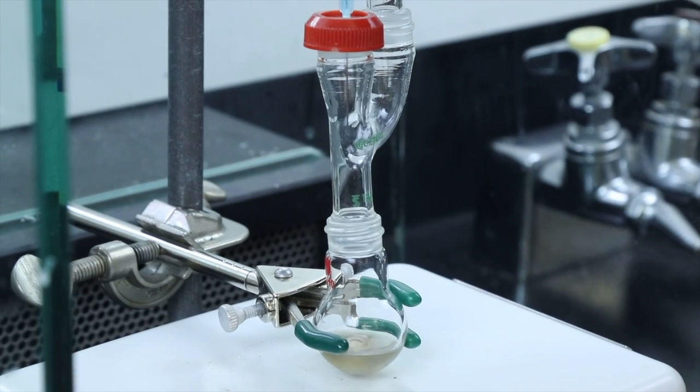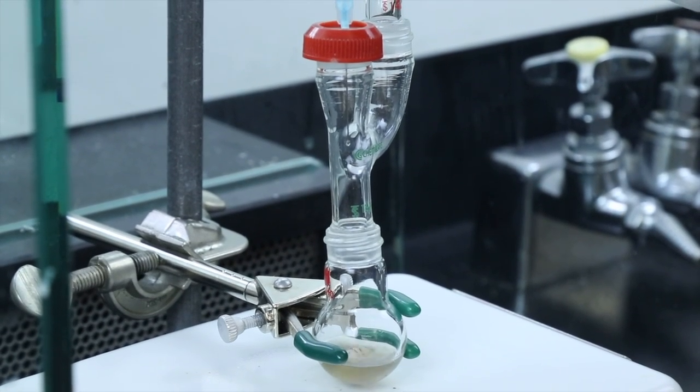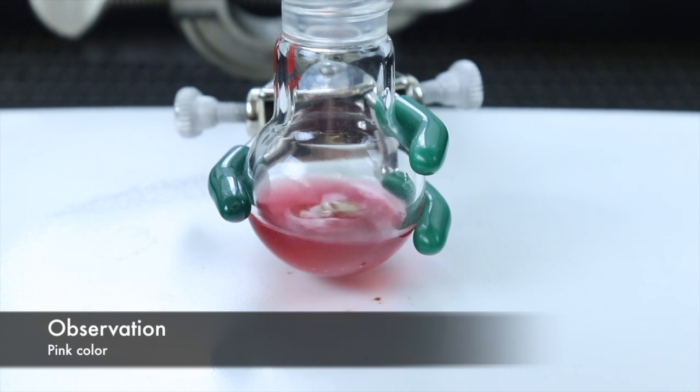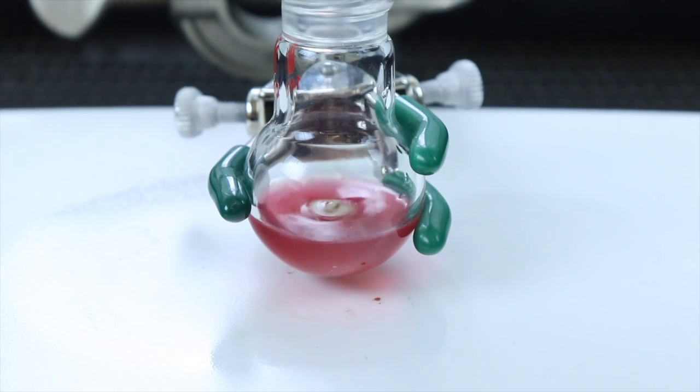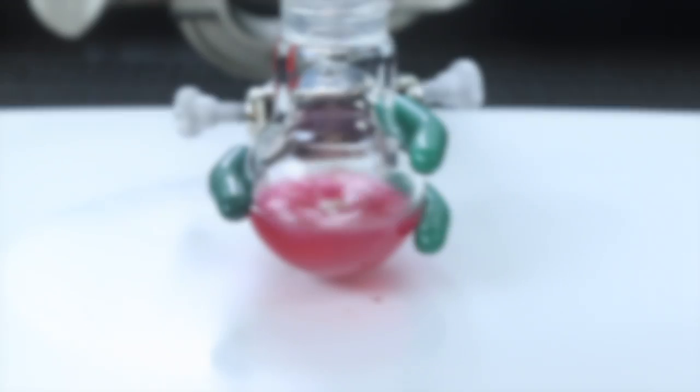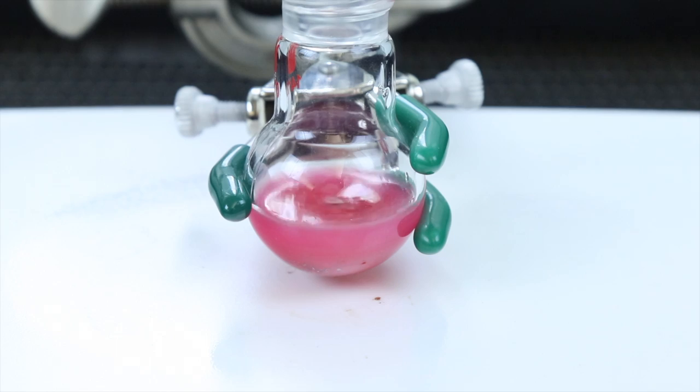Now this solution can be added dropwise to the flask, and this is where we're expecting to see the pink color, which we can clearly see forming here, so that's great. That means we don't have to restart the reaction. I'll finish adding all of that solution, then rinse the dram vial with some more diethyl ether, and add that to the flask as well.